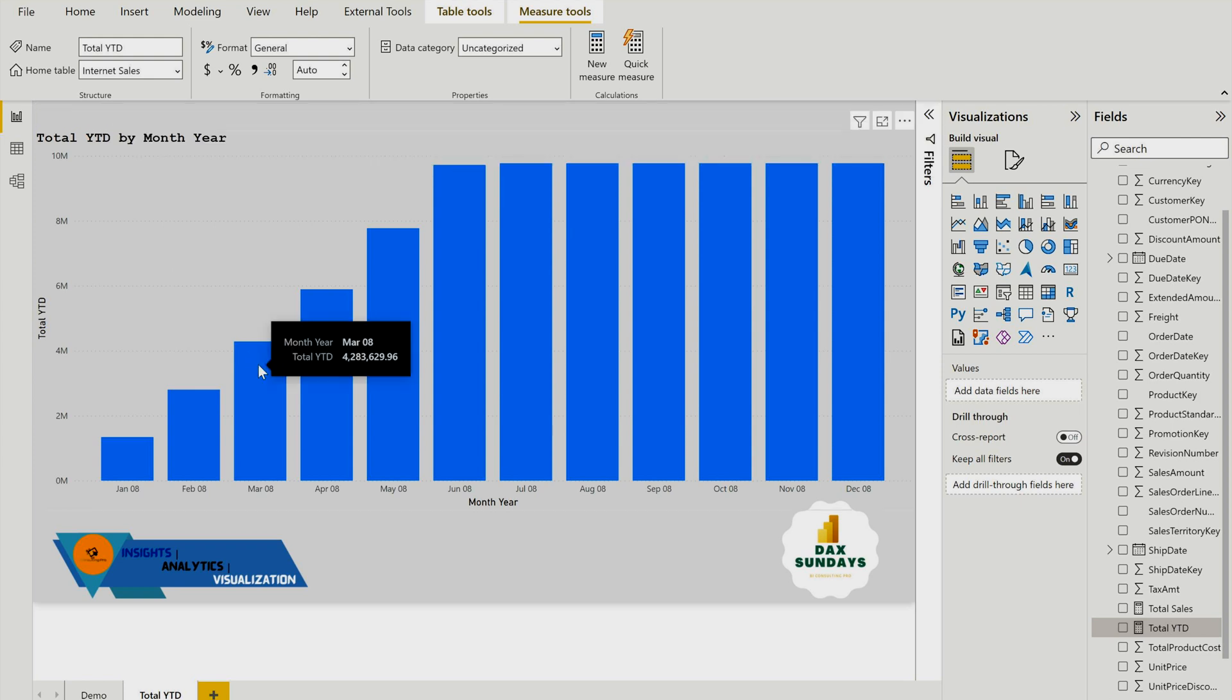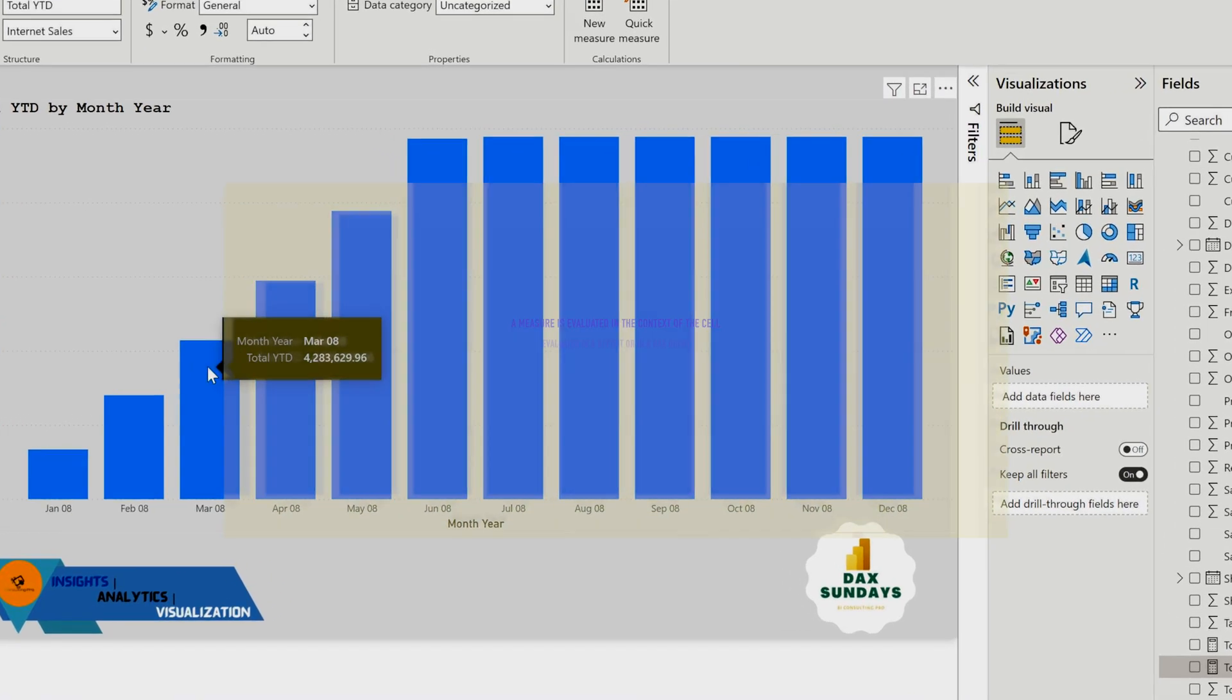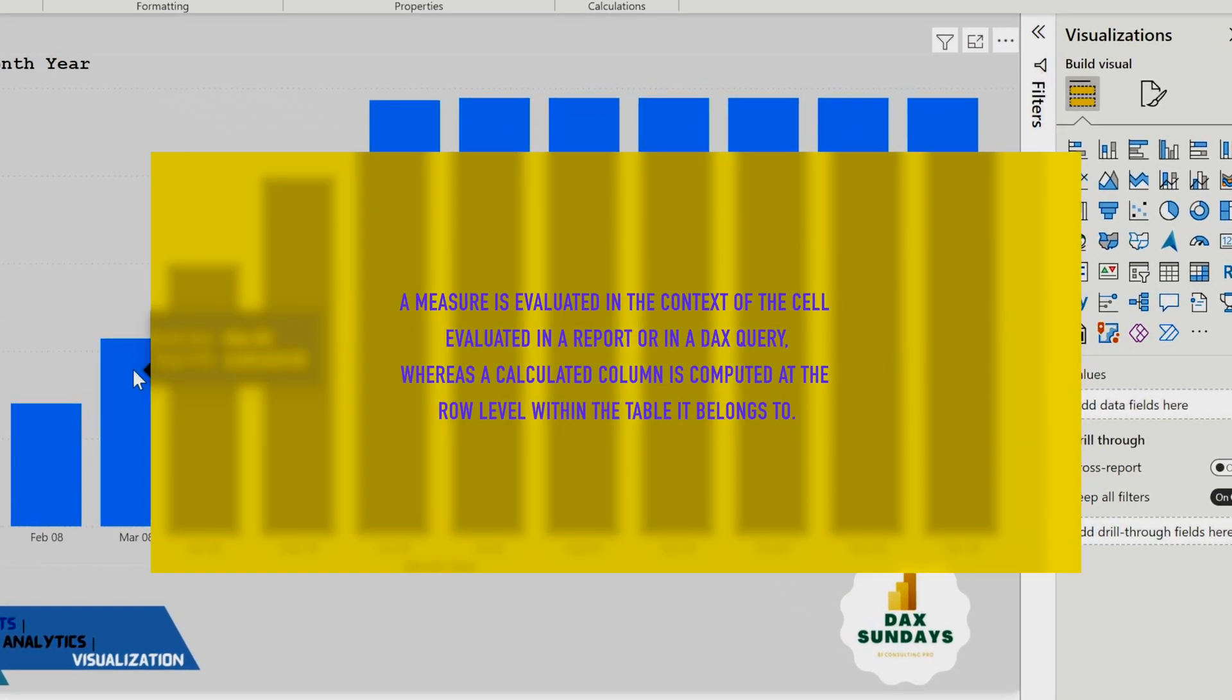But you have to remember the basic difference between them, and the basic difference is the part of evaluation. That means a measure is evaluated in the context of a cell, while calculated columns are being evaluated in the context of a row.